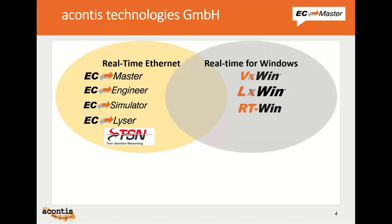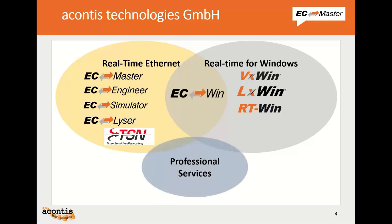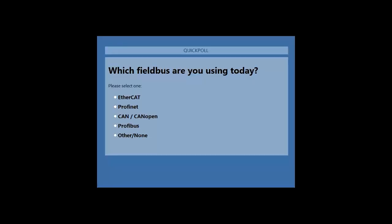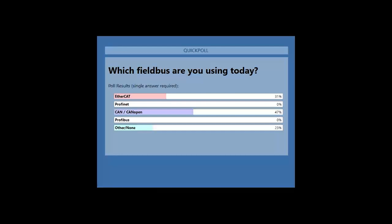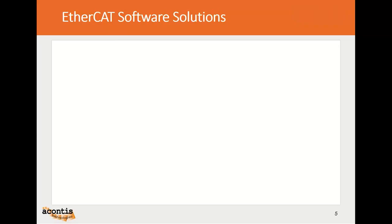Acontis offers software products for real-time Ethernet communication, mainly EtherCAT and TSN, and also for running a real-time operating system alongside Windows. This is supplemented by professional services. We ran a quick poll about the fieldbus you are using — the results show many of you are already working with EtherCAT, and a lot have experience with CAN and CANopen. This confirms what we've seen: people are moving from CAN or CANopen to EtherCAT.